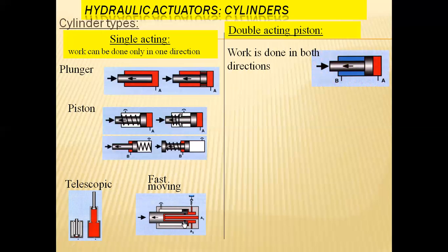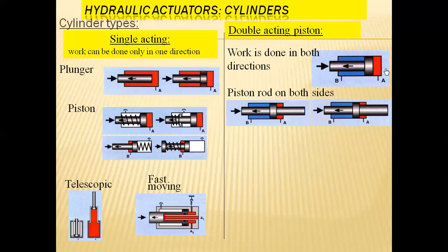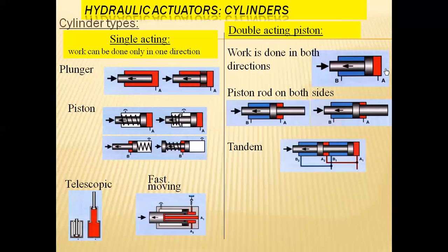In the case of the double acting piston, work is done in both directions. Fluid entering toward side A leads to extension of the piston; when pressure is applied on side B, the piston moves toward the left — the contraction position. With a piston rod on both sides, it can support bilateral movement of fluids from one channel or port to the other, maintaining any number of channels with a single piston.